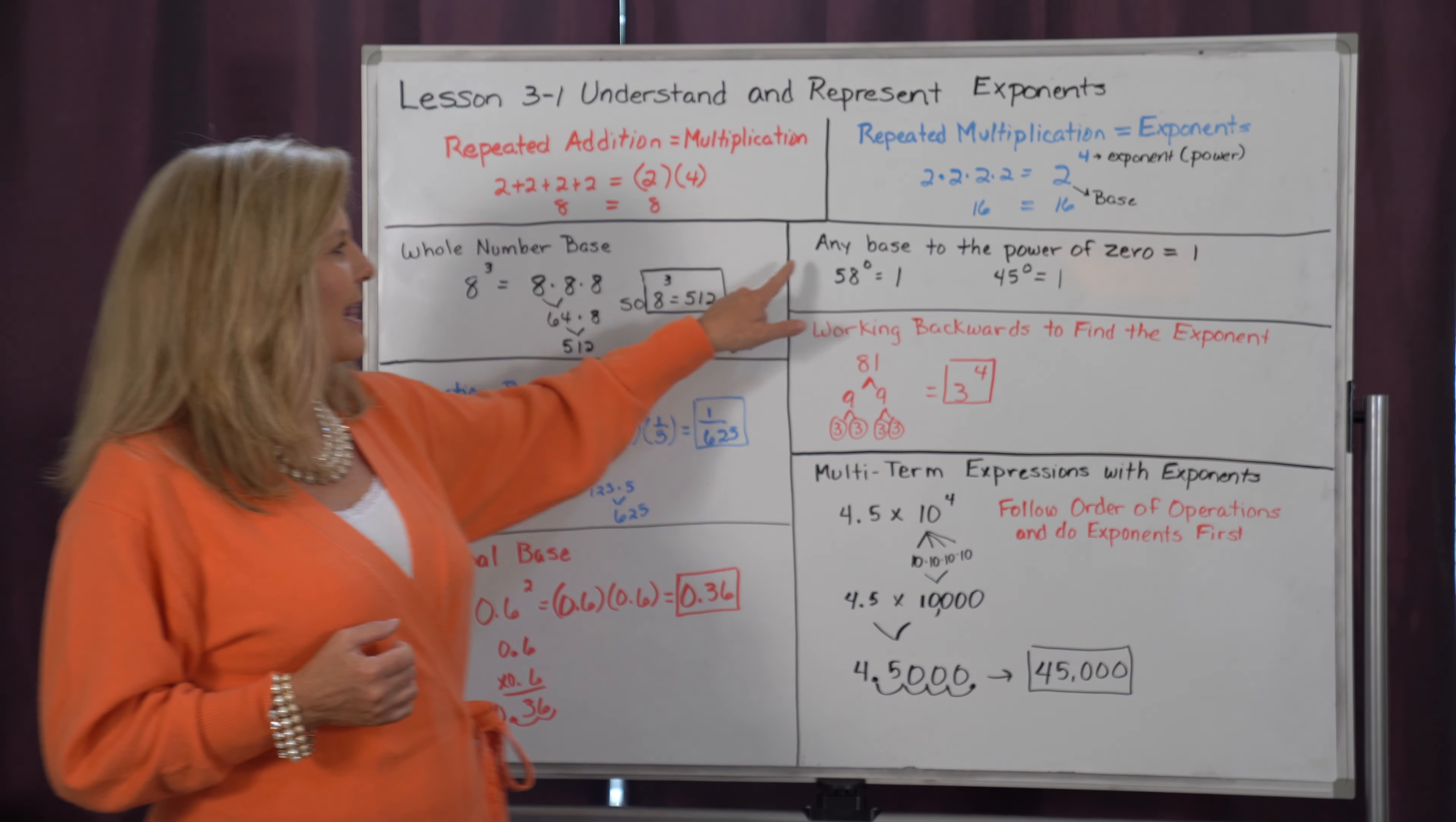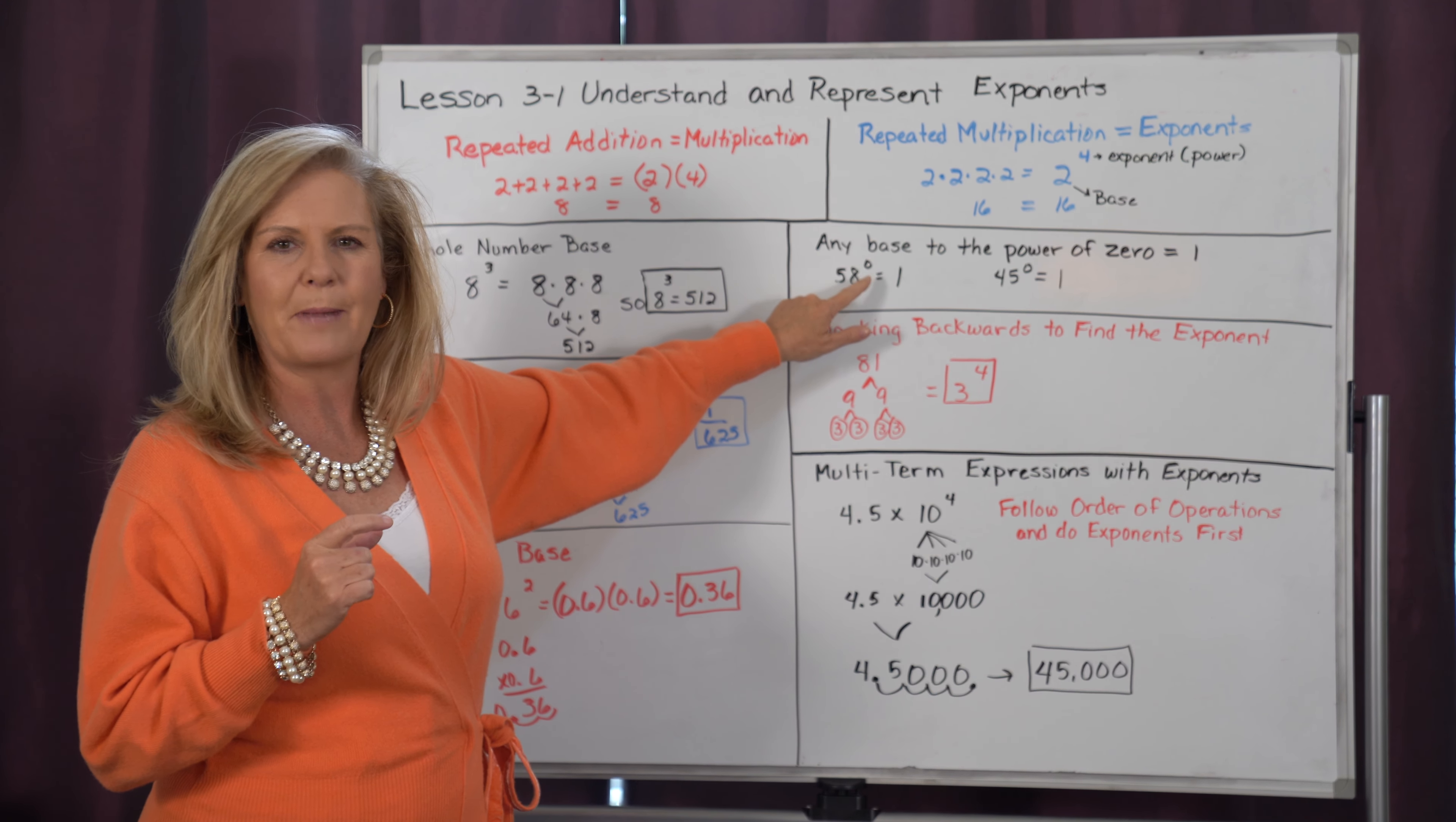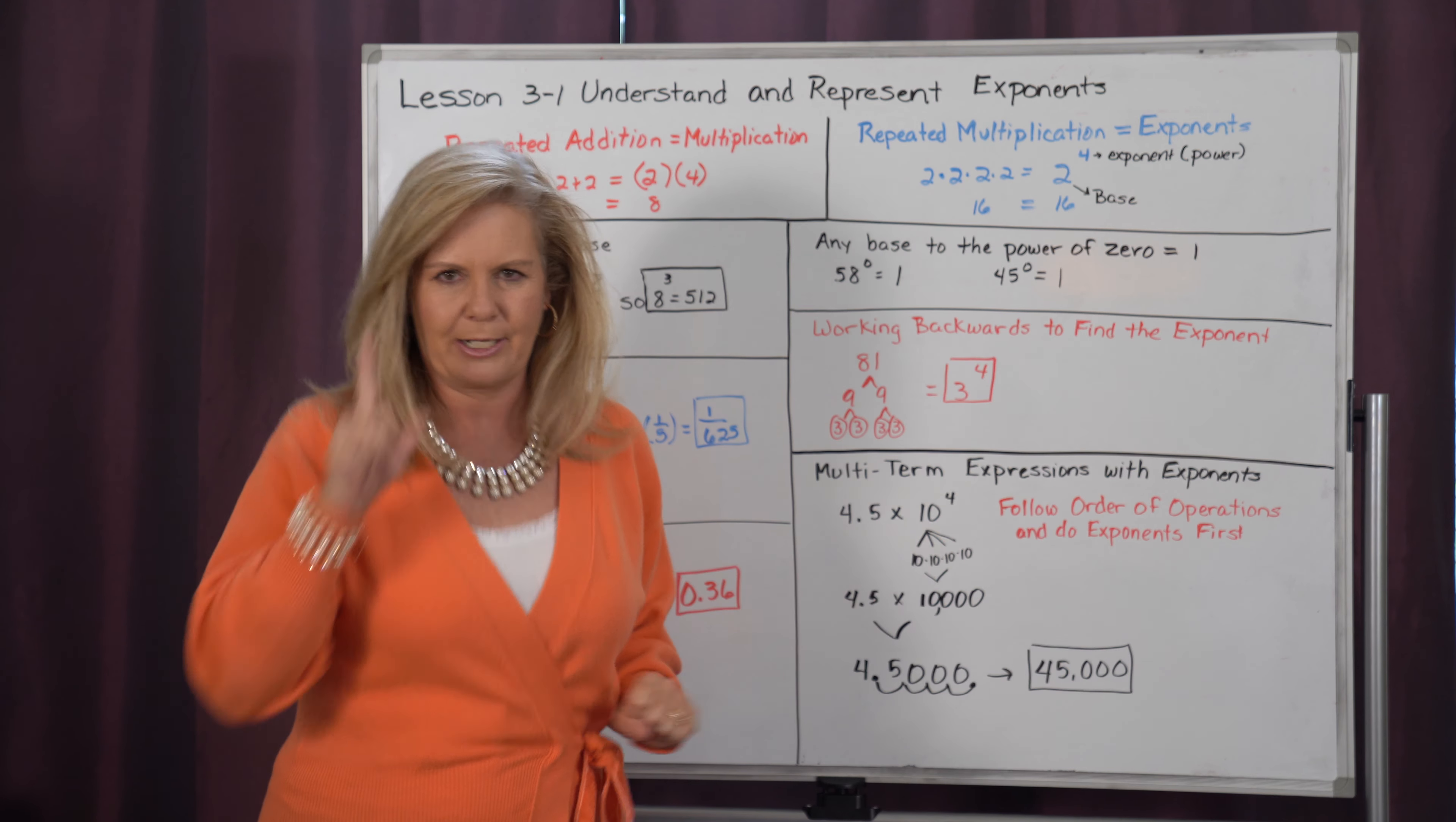Now, a special exponent is the exponent of 0. I'm not going to go into details why this is, because it takes a while to understand. But I just want you to know that if you have any base to the 0 power, it always equals 1. So 58 to the 0 power equals 1. 45 to the 0 power equals 1. 1,214 to the 0 power equals 1. Anything to the 0 power equals 1.